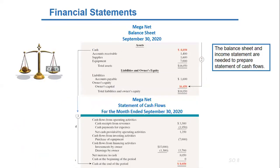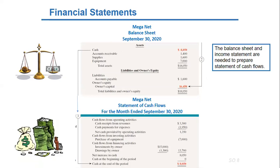The fourth financial statement is the statement of cash flows. It summarizes information about the cash inflows and outflows for a specific period of time.